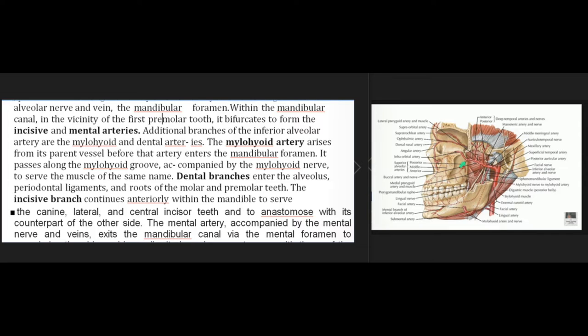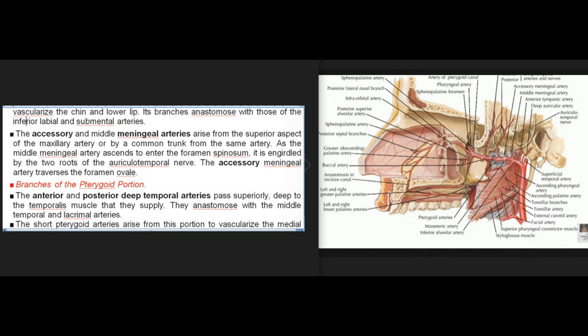The mylohyoid artery passes along the mylohyoid groove accompanied by the mylohyoid nerve to serve the mylohyoid muscle. Dental branches enter the alveolus, periodontal ligaments, and roots of the molar and premolar teeth. The incisive branch continues anteriorly within the mandible to serve the canine, lateral, and central incisor teeth and anastomoses with its counterpart of the other side. The mental artery exits the mandibular canal via the mental foramen to vascularize the chin and lower lip. The middle meningeal artery ascends to enter the foramen spinosum, encircled by the two roots of the auriculotemporal nerve. The accessory meningeal artery traverses the foramen ovale.